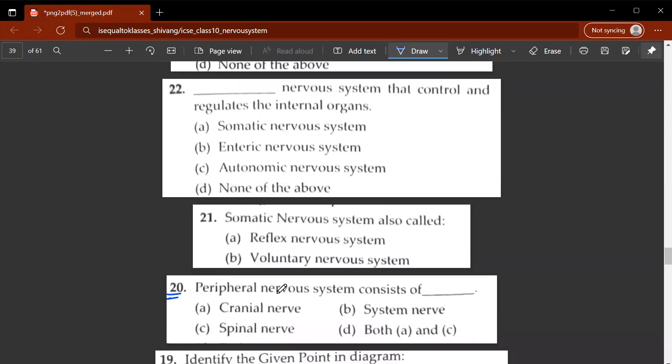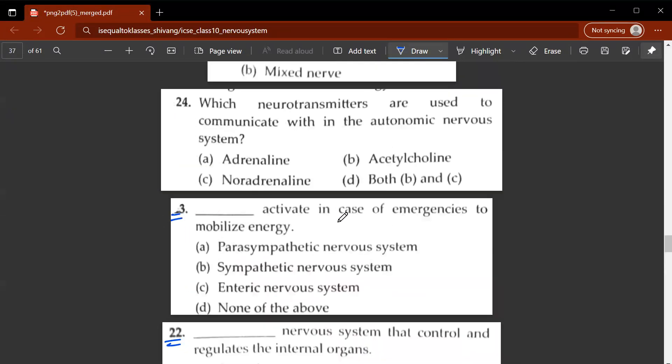20th question. Peripheral nervous system consists of what? So it consists of D. Now what is A and C? So it consists of the cranial nerve and it consists of the spinal nerve. 21st question. Somatic nervous system is also called, it is also called voluntary nervous system. 22nd question. Dash nervous system that controls and regulates the internal organ is known as the autonomic nervous system. 23rd question. Dash activates in case of emergencies. In case of emergencies to mobilize energy. So that would be B. Sympathetic nervous system.